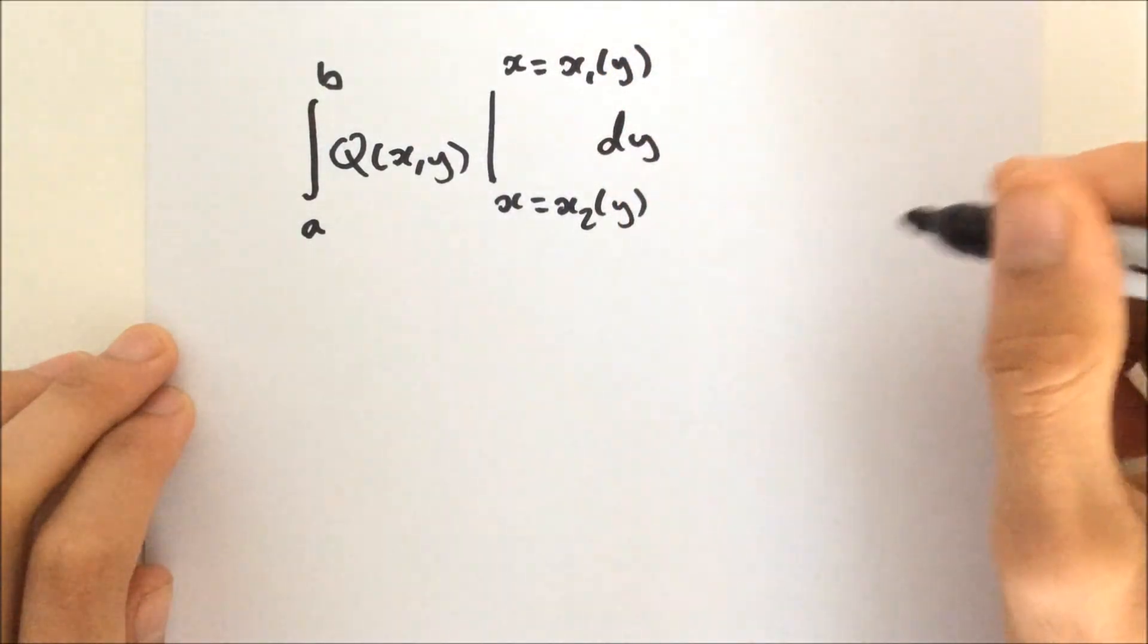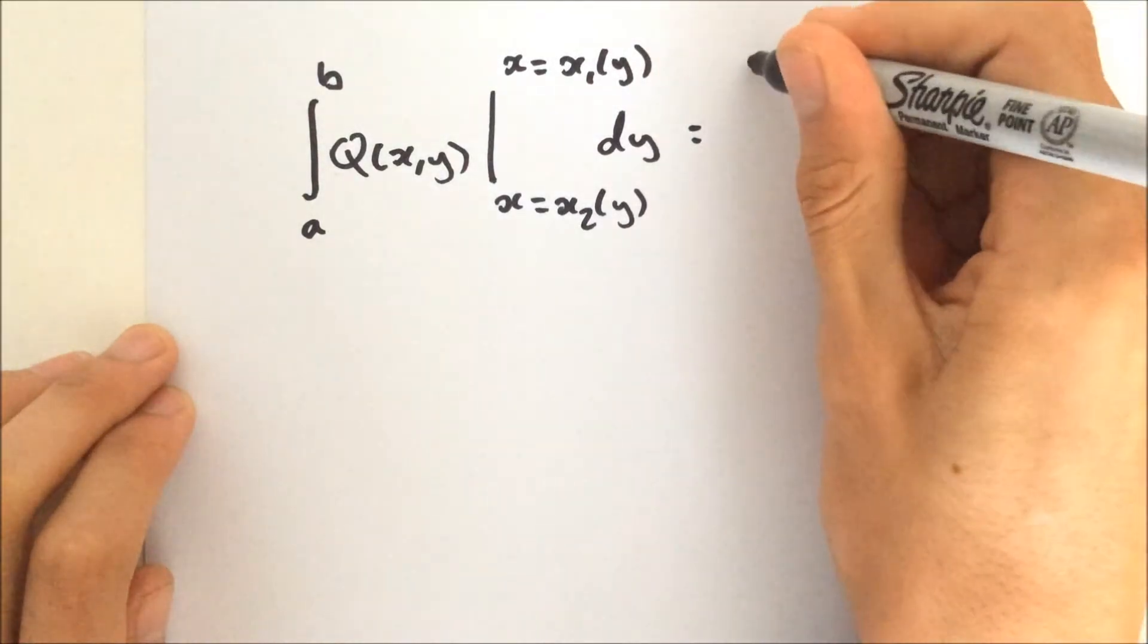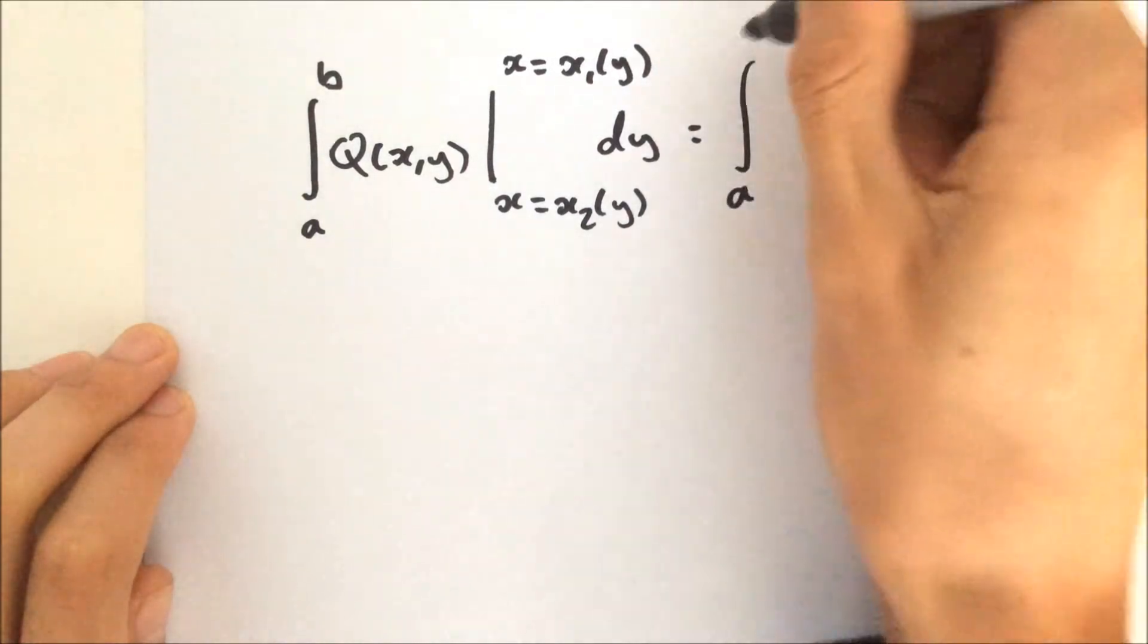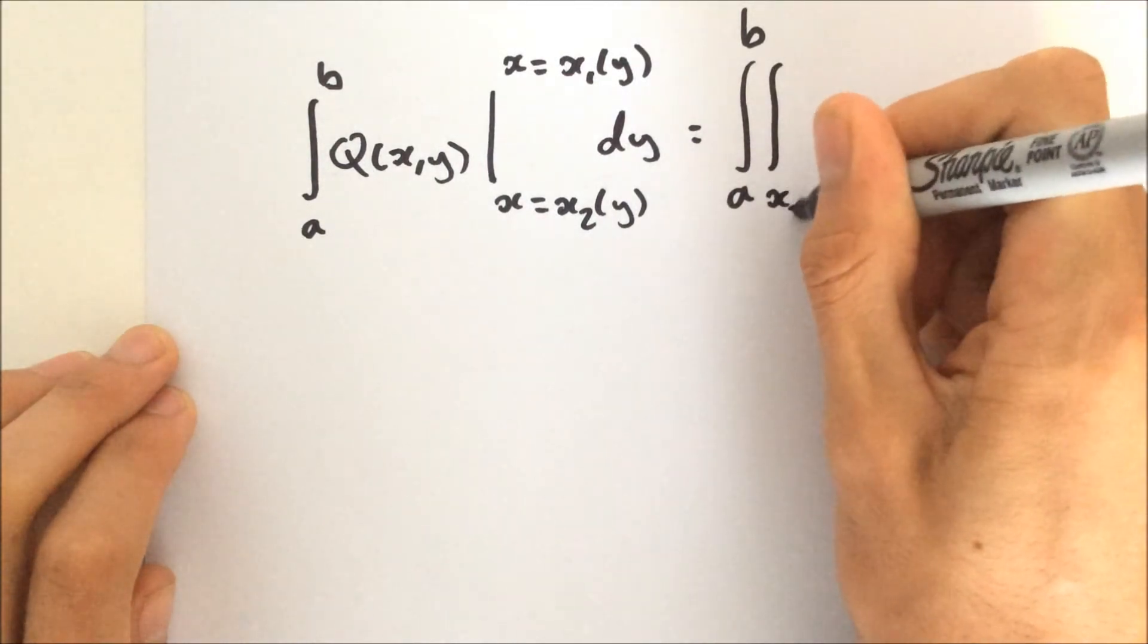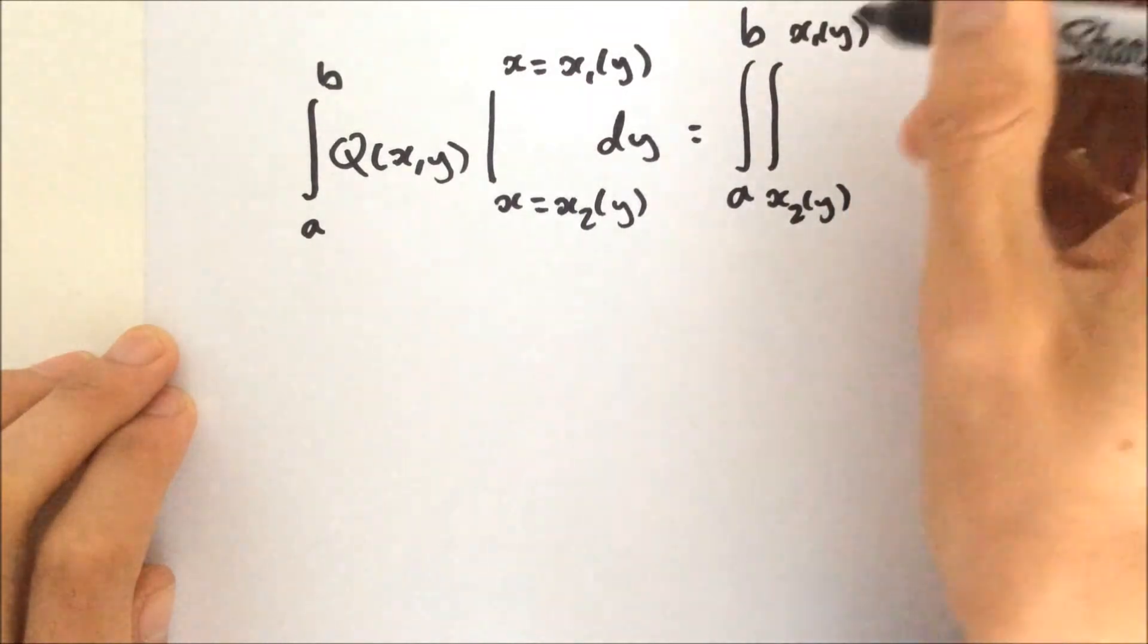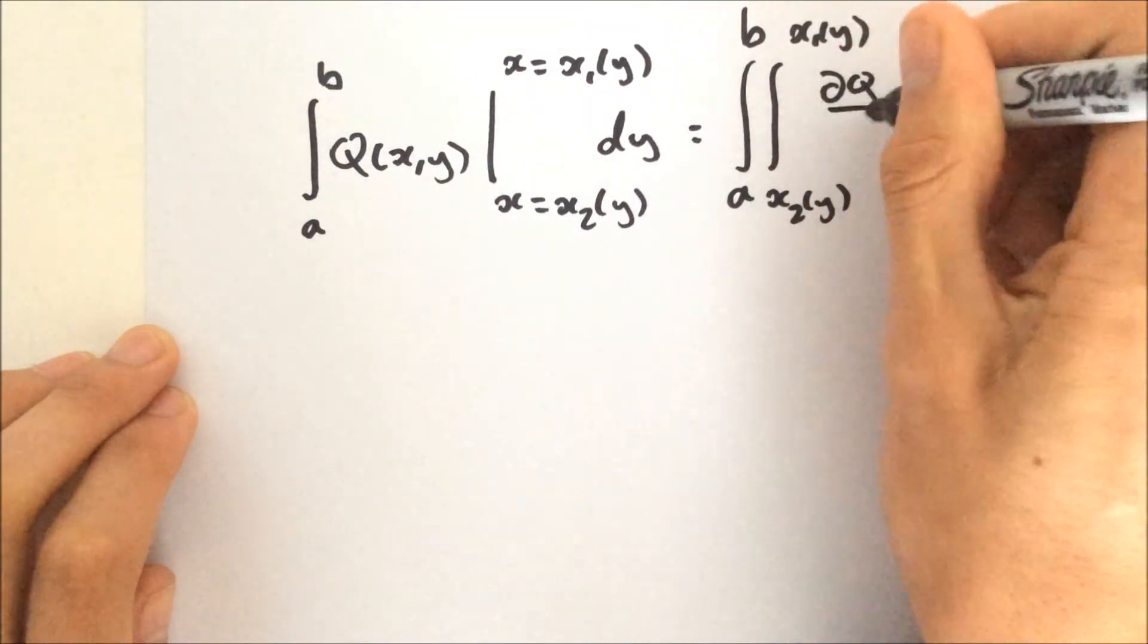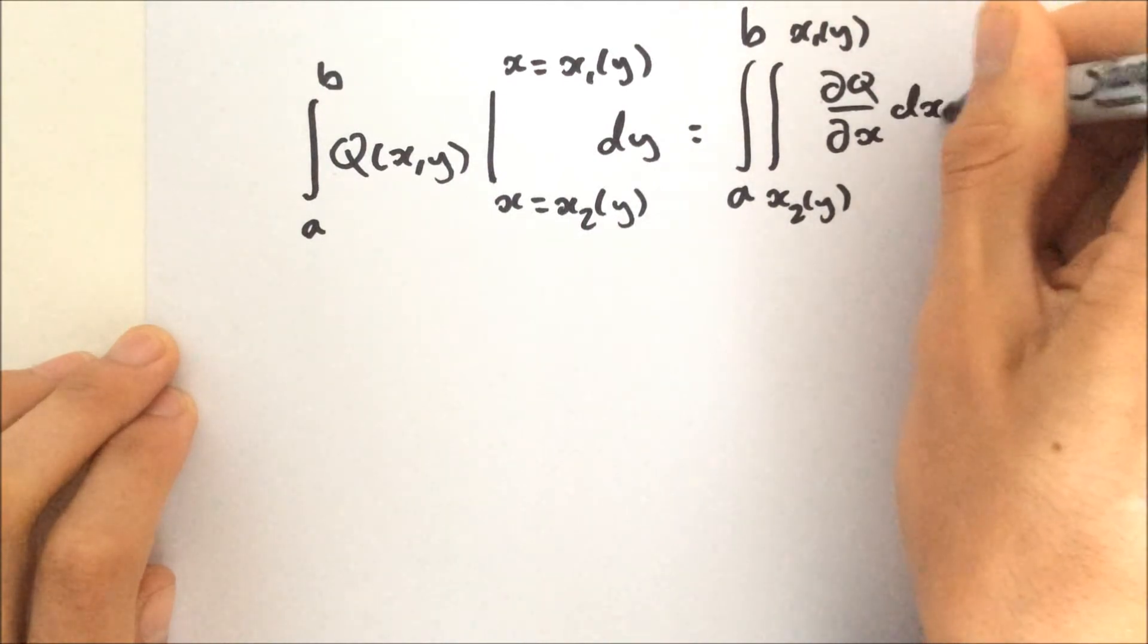So like last time, we can write this as a double integral, or a volume integral. So A to B, and then the integral from x2(y) to x1(y), of course, is the partial derivative with respect to x dx dy.